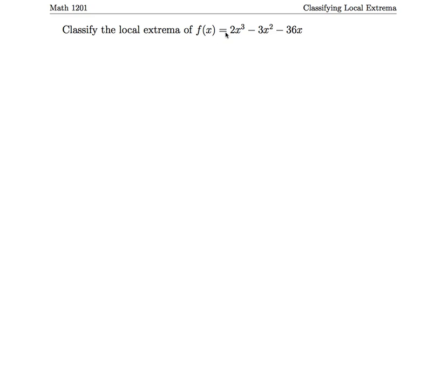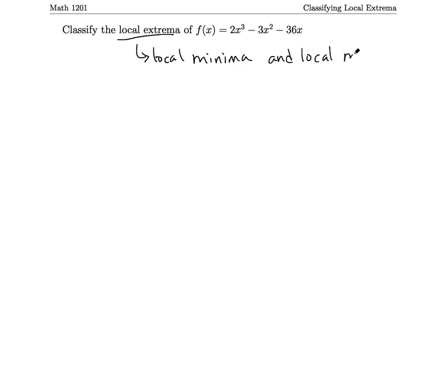In this video, we are going to work to classify the local extrema of this function. Our function is f(x) = 2x³ - 3x² - 36x. As a reminder, what does it mean when I say local extrema? We're looking for local minima and local maxima. We're going to try to find them and then classify them.